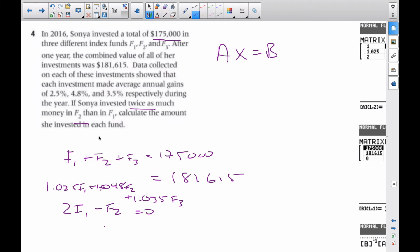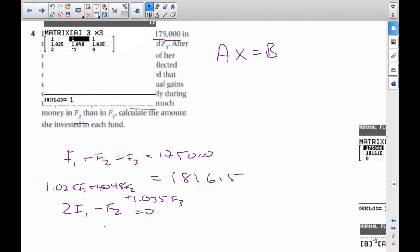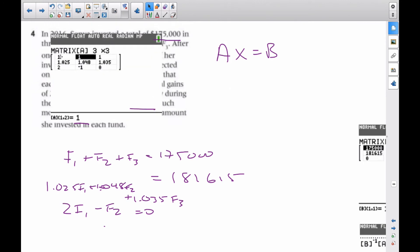A is going to be, simply I'm going to take all the coefficients, and it'll be this particular matrix here: 1, 1, 1, then 1.025, 1.048, 1.035, and then 2, minus 1, and 0. That's matrix A.